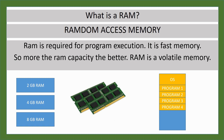For example, if you start a video game, that video game is a program. Once you double-click on any application, that program gets loaded onto the RAM. Through the RAM the program gets stored, and then through the CPU it gets executed. For the CPU to execute the program, it is required to load that program onto the RAM, because RAM is a very fast memory.